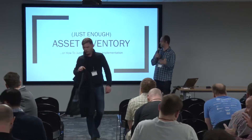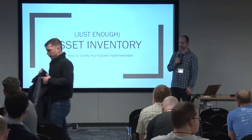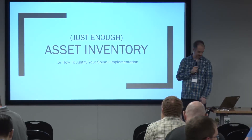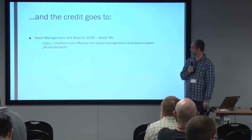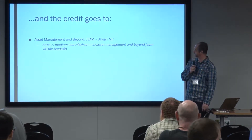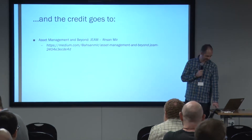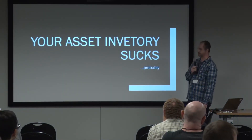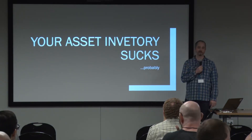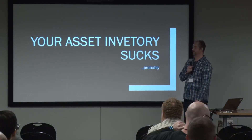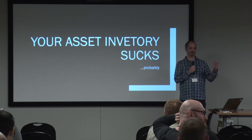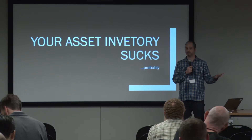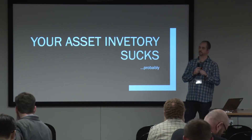I have a quick thing on just enough asset inventory, or how to justify your Splunk implementation. There's a lot of Splunk hate in here and I'm here to help alleviate some of that. The credit goes to an article I read a while back that gave me the idea for how to do this in Splunk. Here's my thesis: your asset inventory sucks, probably. My asset inventory sucks. I can't get from IT what my asset inventory is. It's done manually by hand, which means there are errors — and we've checked it. There are tons of errors.